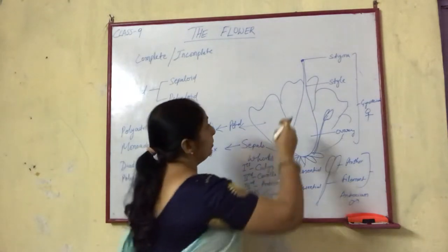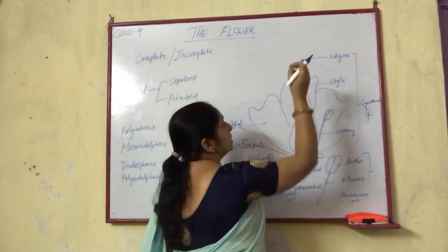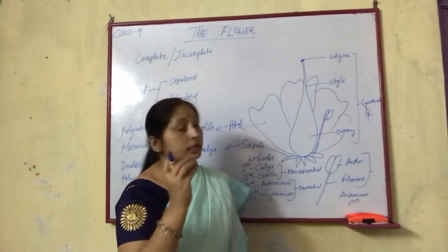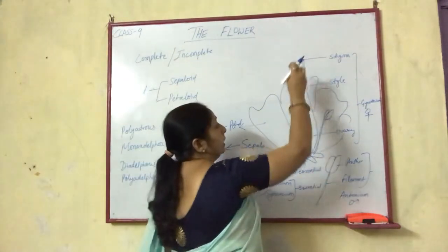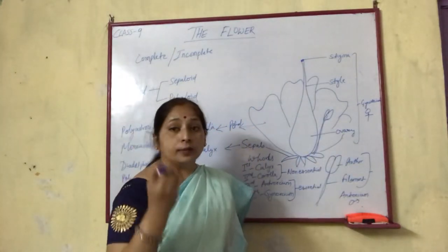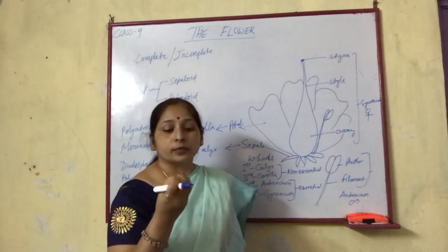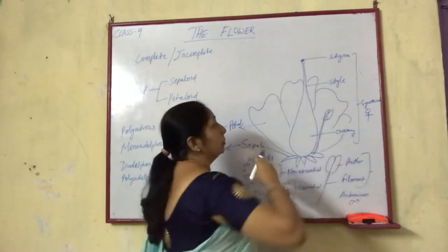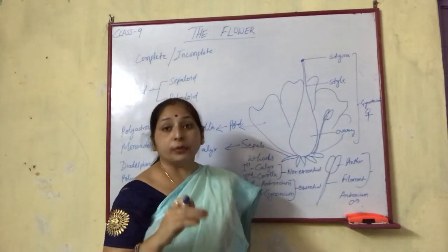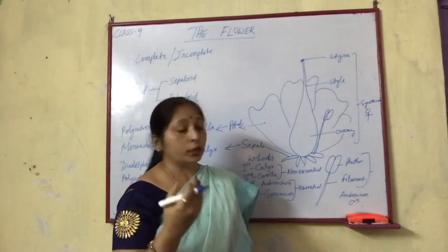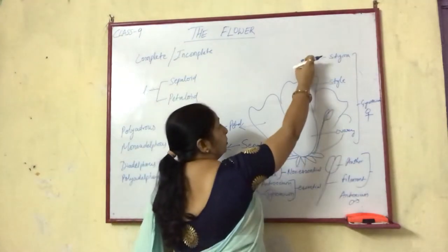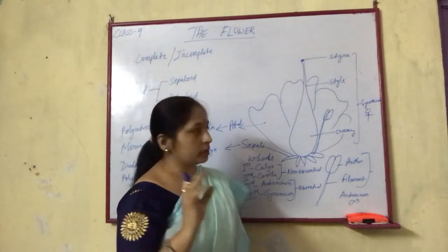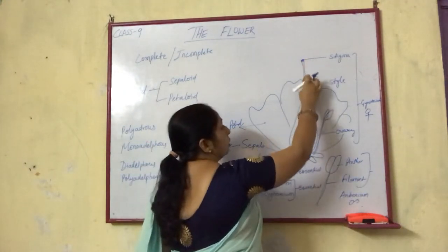The female reproductive organ consists of the stigma, which has a sticky or feathery substance present on it. The stigma traps pollen grains — when pollen grains fall on the stigma, they get attached and develop a pollen tube. So germination of the pollen tube starts at the stigma, which contains a sticky substance or moisture.